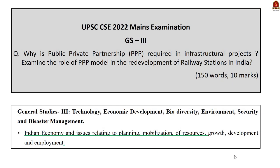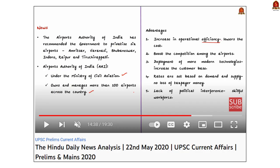Look at this question. This is question number one in GS Paper 3: 'Why is public-private partnership required in infrastructural projects? Examine the role of PPP model in the development of railway stations in India.' For the first part of the question, you have to write about the advantages of the PPP model in infrastructural projects. This we covered on our 22nd May 2020 Hindu News Analysis.